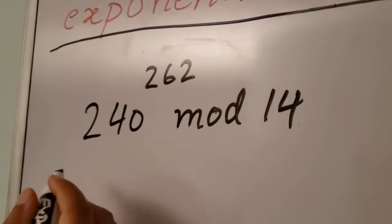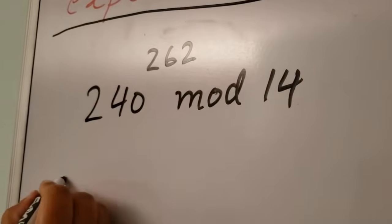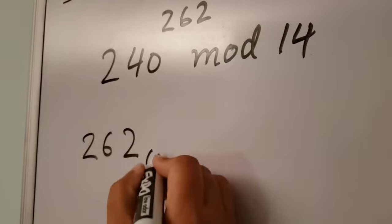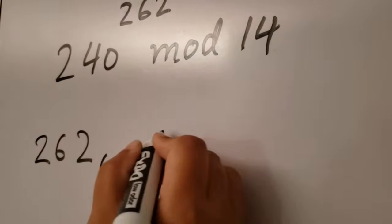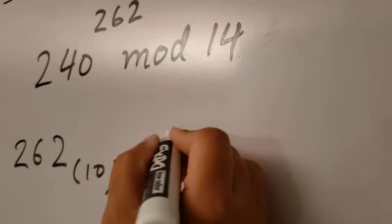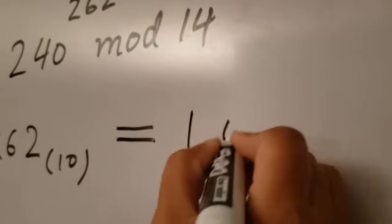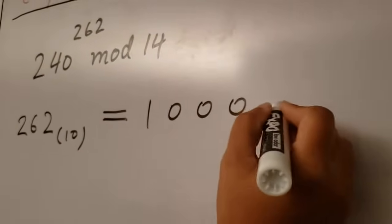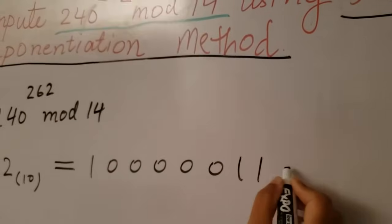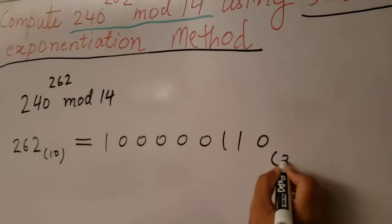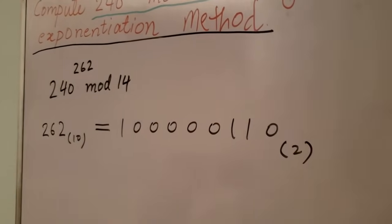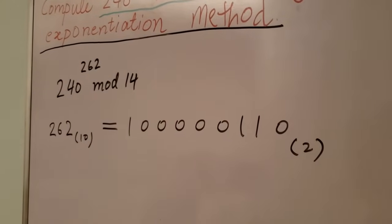The first step is to write down the exponent 262 and find its binary representation, which is 100000110. You can easily find the binary of 262 by decimal to binary conversion.